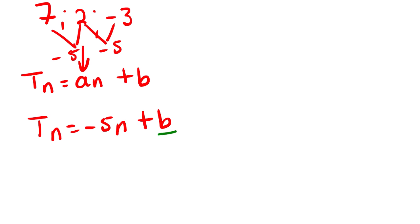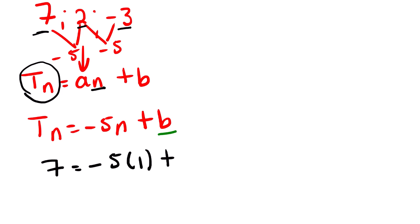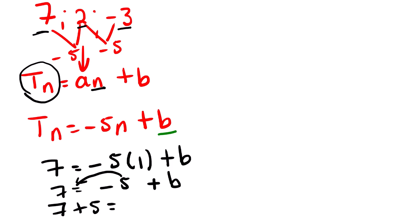Now to find b, we use the trial and error method. Tn stands for the number and n stands for the position of that number. Let us test using 7: Tn equals 7, the position of 7 is 1. So we have 7 equals negative 5 multiplied by 1, which is negative 5, plus b. Transposing: 7 plus 5 equals b, so b equals 12.